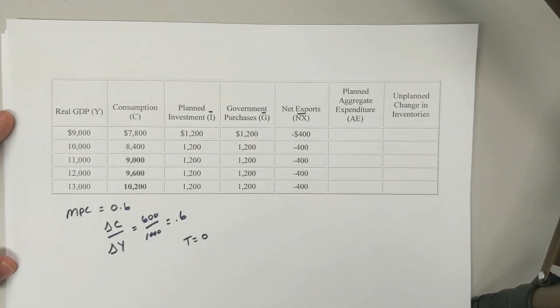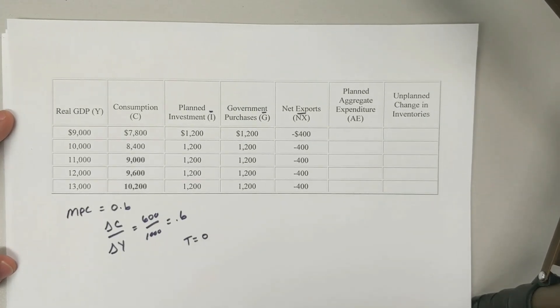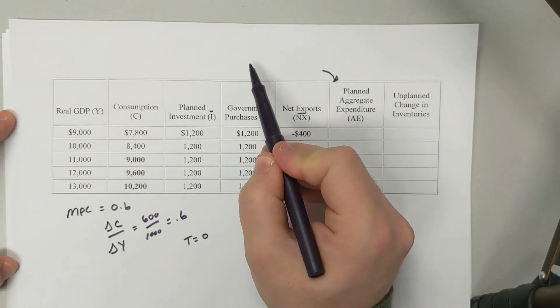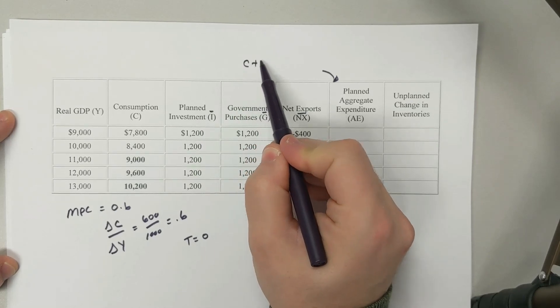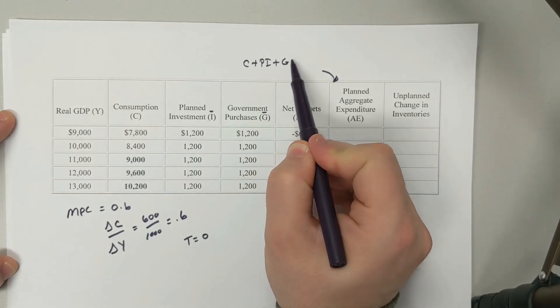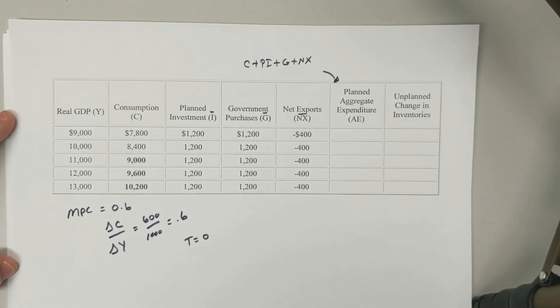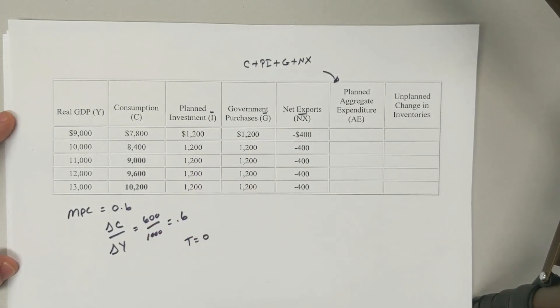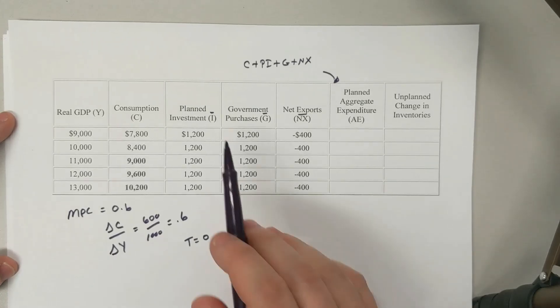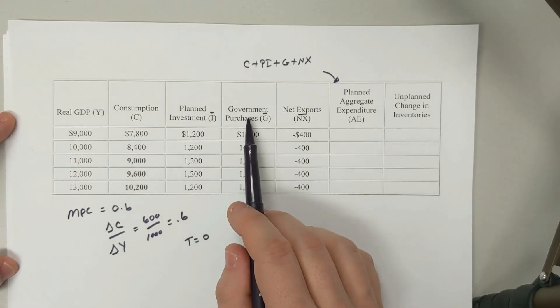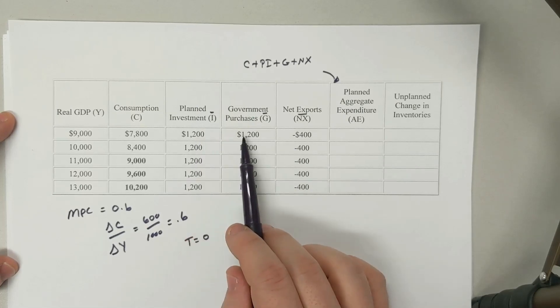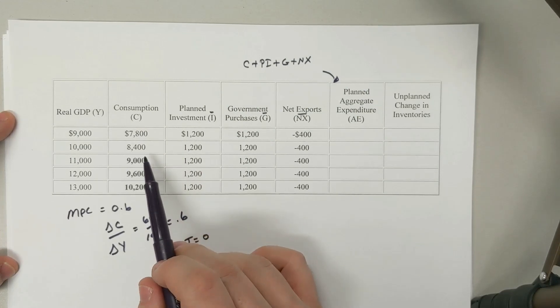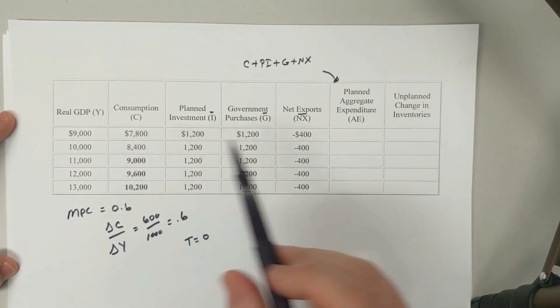The first thing is we want to find out that planned aggregate expenditure. Remember, aggregate expenditure is consumption plus planned investment plus government purchases plus net exports. So let's add all of these up. When I add up planned investment, government purchases, and net exports, it's 2,400 minus 400. So that's an extra $2,000 we have to add to each one of these consumptions.